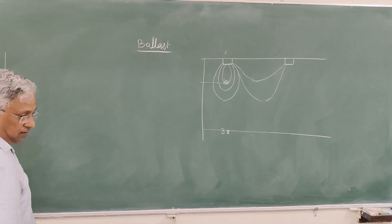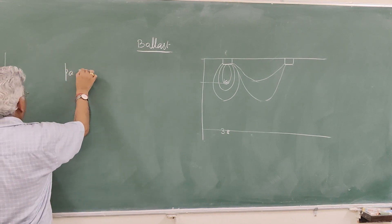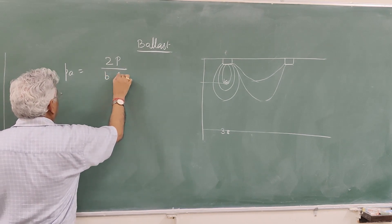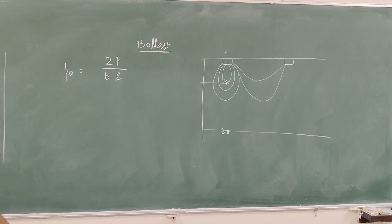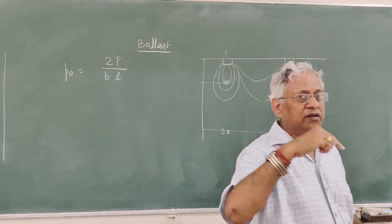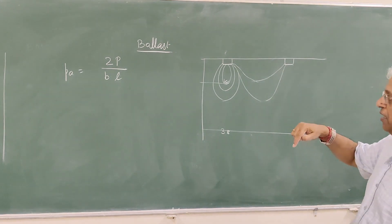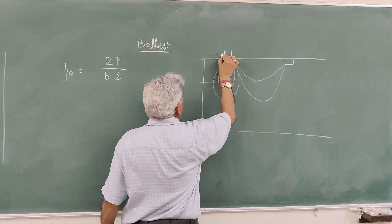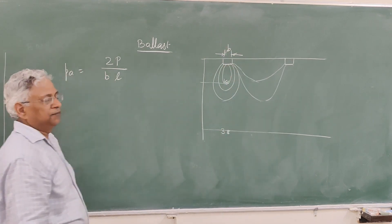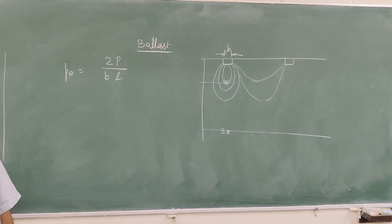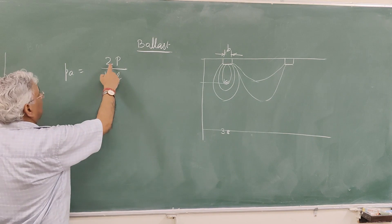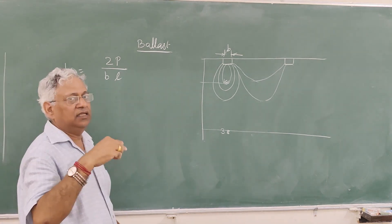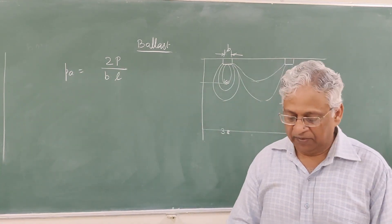The pressure at the bottom of the sleeper — that is, the top of the ballast — is calculated using the equation: PA = 2P upon B into L. Here P is the wheel load, B is the width of the sleeper, and L is the length of the sleeper. It is L/2 because each sleeper supports two rail seats. So that is the pressure at the top of the ballast or bottom of the sleeper.